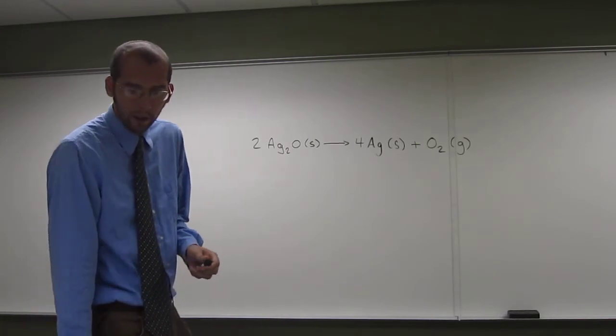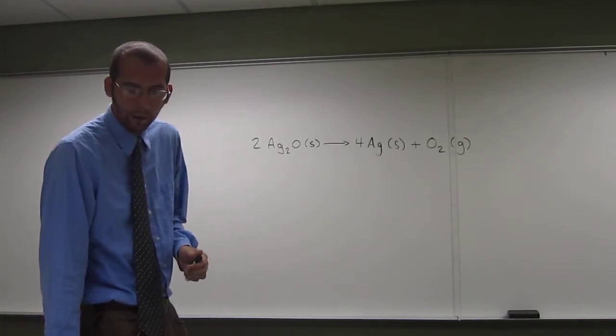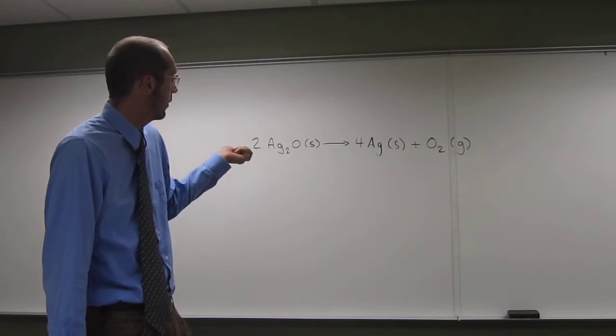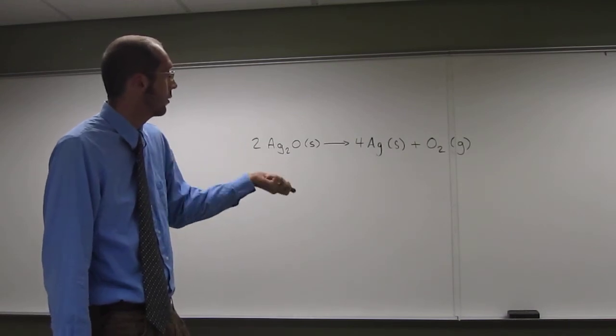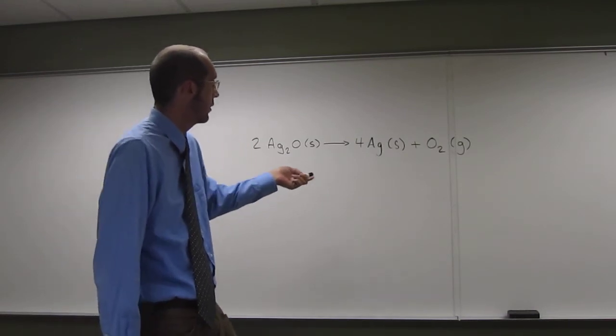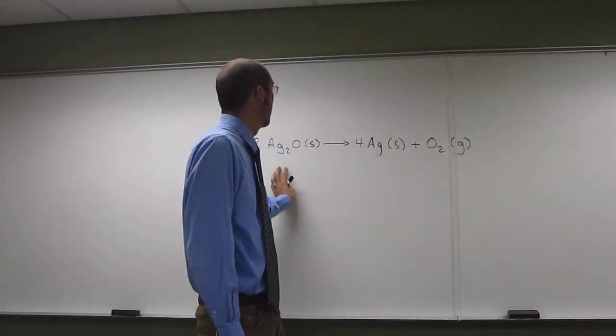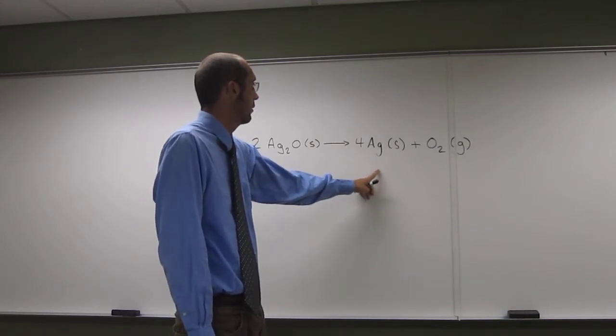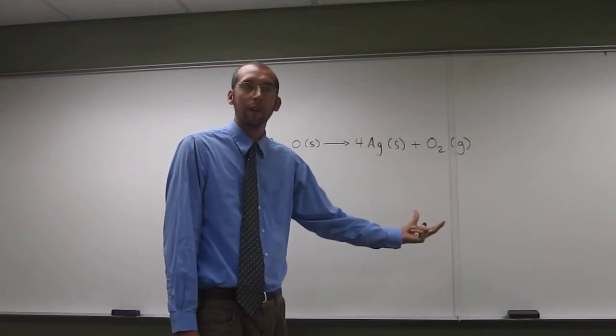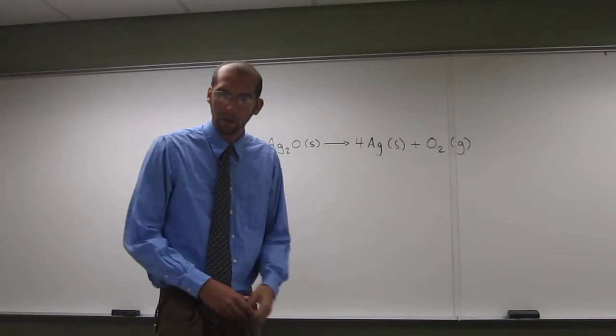So, let me read the problem to you guys. Silver 2 oxide decomposes via the following balanced chemical equation: 2 Ag2O solid goes to 4 Ag solid plus O2 gas. You can actually see the decomposition because you get silver out of it. So, you'll see the silver color.